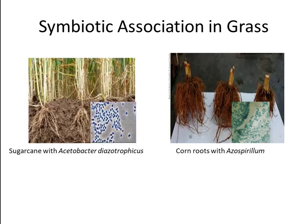In grass associations, root nodules are not produced; instead, the nitrogen fixing bacteria colonize plant tissue or anchor to the root surface, mainly around the elongation zone and root hairs. For example, the nitrogen fixing bacterium Acetobacter diazotrophicus lives in the apoplast of stem tissue in sugarcane and may provide its host with sufficient nitrogen to grant independence from nitrogen fertilization. The potential for applying Azospirillum to corn and other grains has been explored, but Azospirillum seems to fix little nitrogen when associated with plants.